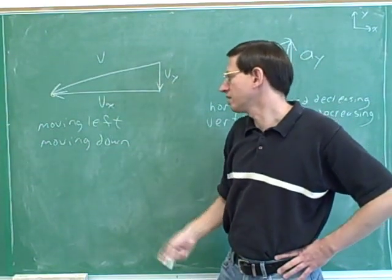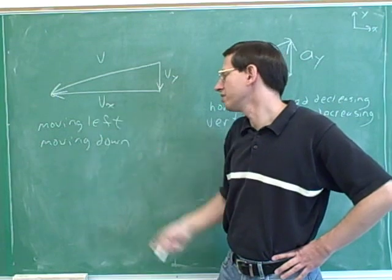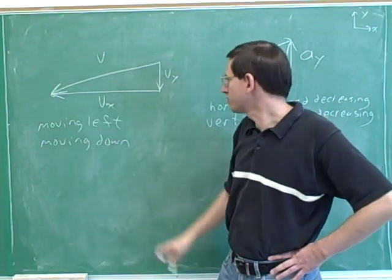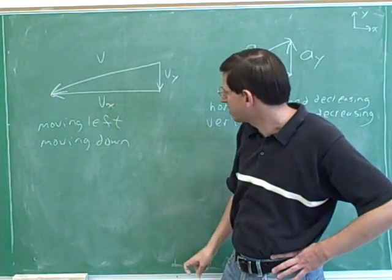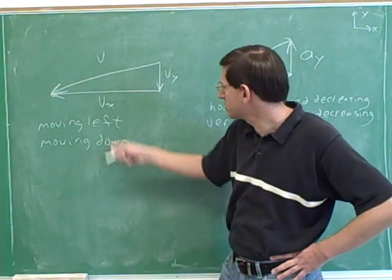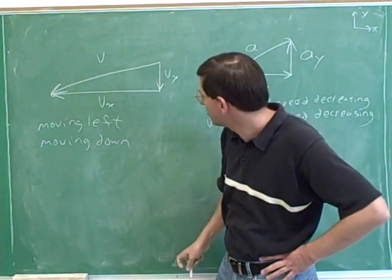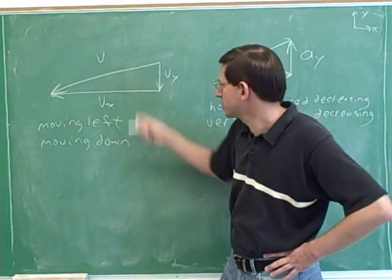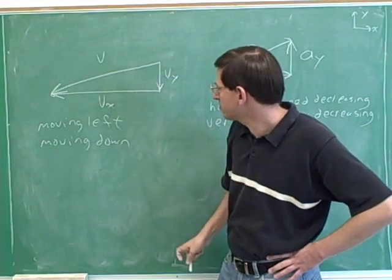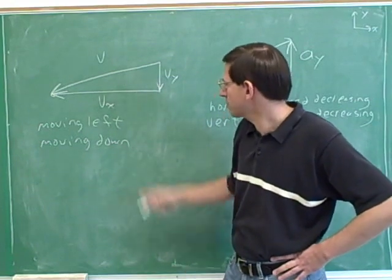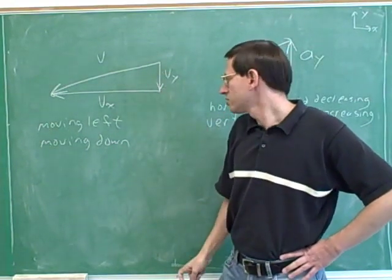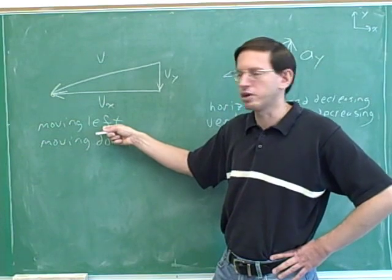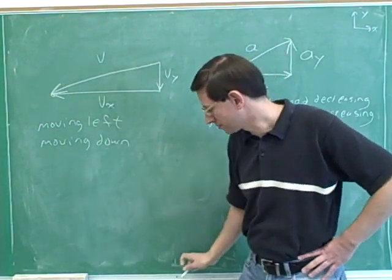So we can see here that we're moving left and down, but our leftward speed is quite a bit bigger than our downward speed. If I drew this to scale, the leftward speed is maybe three times as big as the vertical speed. So our leftward motion here is going much faster than our downward motion.